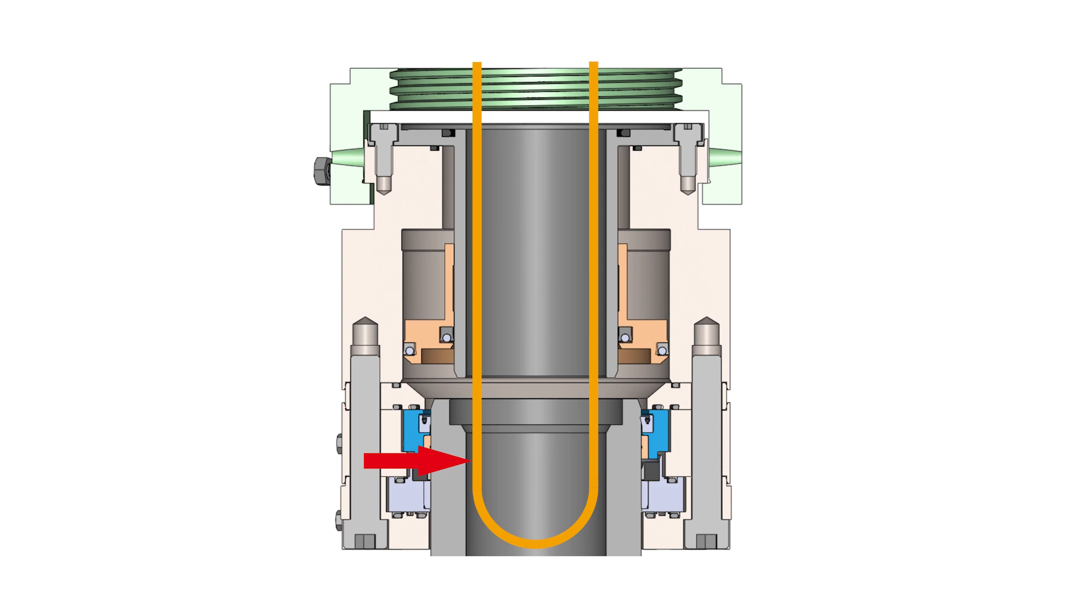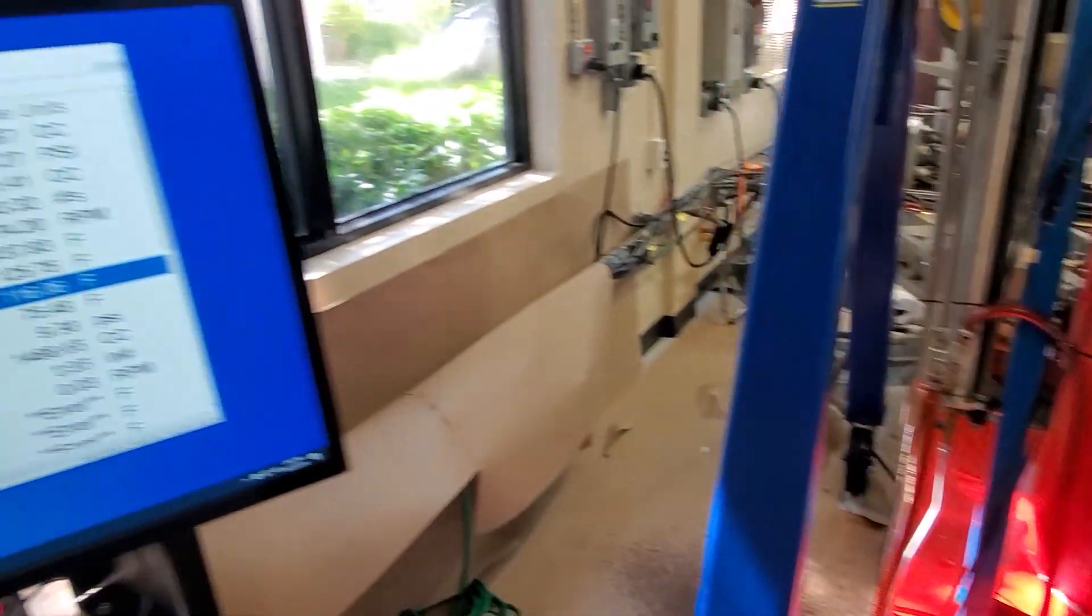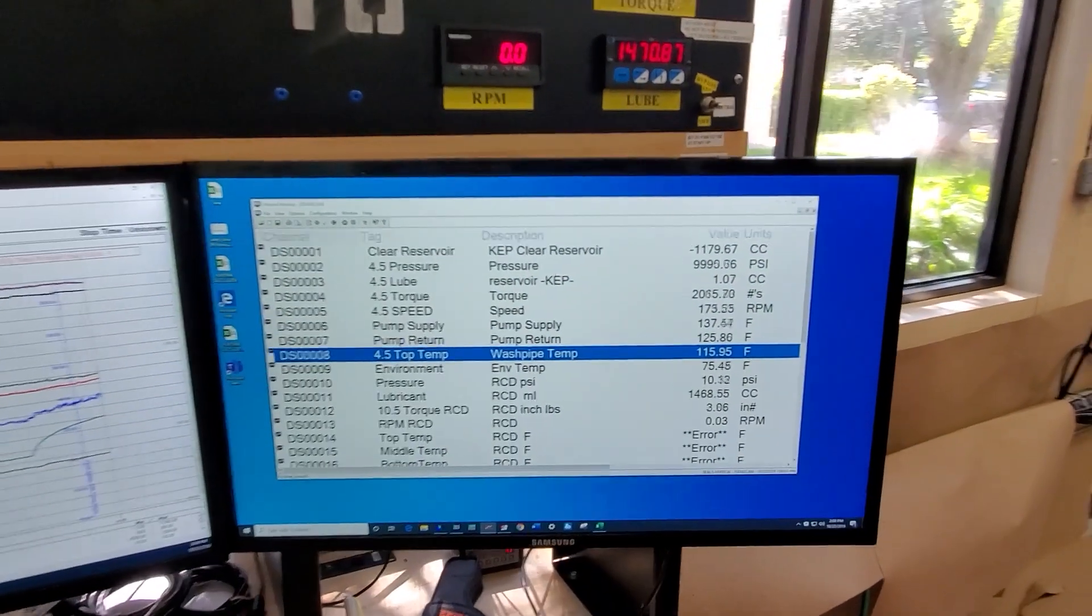Low-pressure water was circulated through a stationary U-shaped tube that was located inside the washpipe. The coolant circulation rate was about 8 gallons per minute. The fluid temperature near the high-pressure seal was approximately 103 degrees Fahrenheit at 120 RPM, 110 degrees Fahrenheit at 150 RPM, and 115 degrees Fahrenheit at 175 RPM.